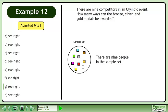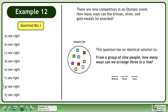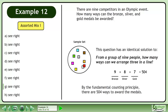There are nine people in the sample set. This question has an identical solution to from a group of nine people, how many ways can we arrange three in a line? By the fundamental counting principle, there are 504 ways to award the medals.